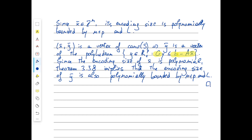For ȳ: the same bound applies, but ȳ might not be integral. Instead, note that ȳ is a vertex of the polyhedron {y ∈ R^p_+ : Gy ≤ b − Ax̄}, obtained by fixing x to x̄. Since x̄ has polynomial encoding size, so does b − Ax̄, and all the data is polynomial size. By theorem 3.38, the encoding size of ȳ is also polynomially bounded by n+p and L. This concludes the proof of Lemma 4.35, which therefore implies that mixed integer linear programming feasibility is in NP.